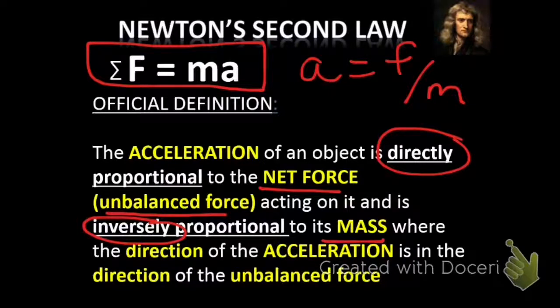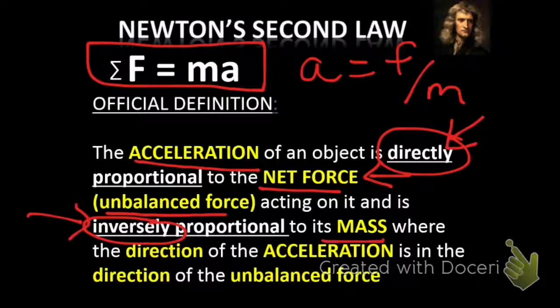So unpack that again. When you push on something with a net force, it's going to accelerate. Directly proportional means that the more you push, the more it accelerates. And it's inversely proportional to the mass. So that means the bigger the mass something has, the less it accelerates when you push on it.